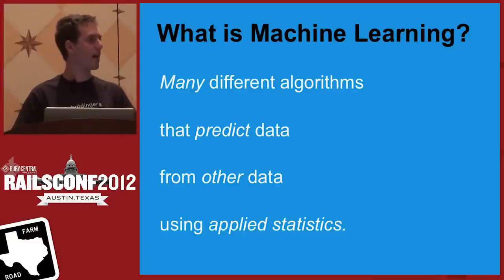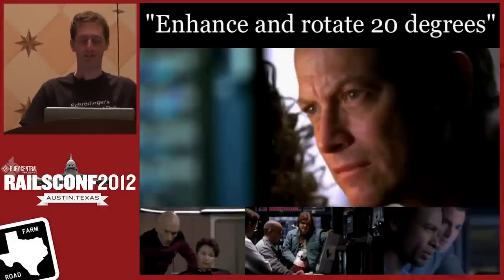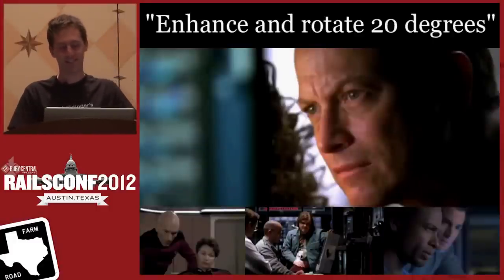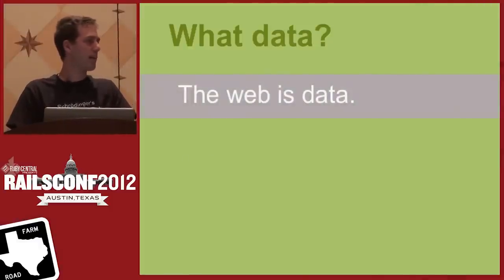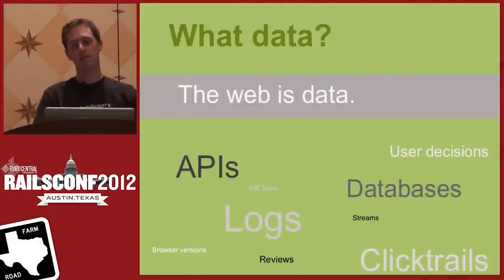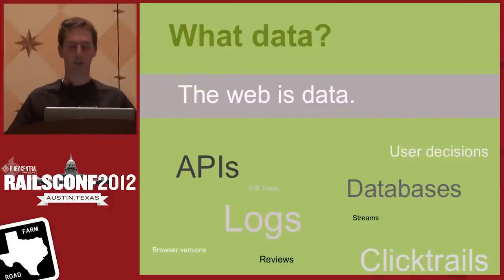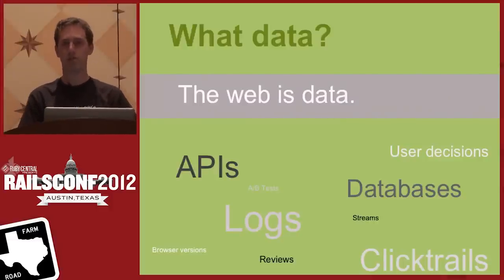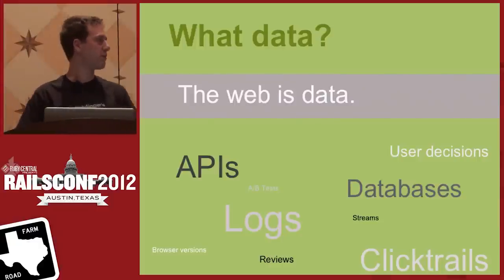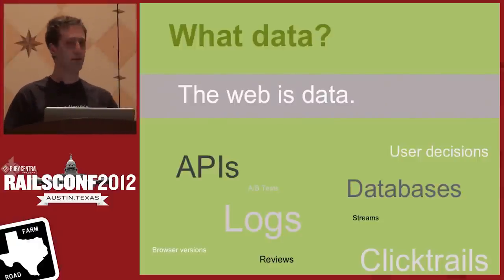Machine learning is not magic — you can only predict what's actually there. The web is made of data: APIs, logs, click trails, user decisions — all of these things are data that live in your SQL or NoSQL database. You can analyze it and make predictions from it using machine learning. Your users leave trails of data wherever they go, and you can do things with this.